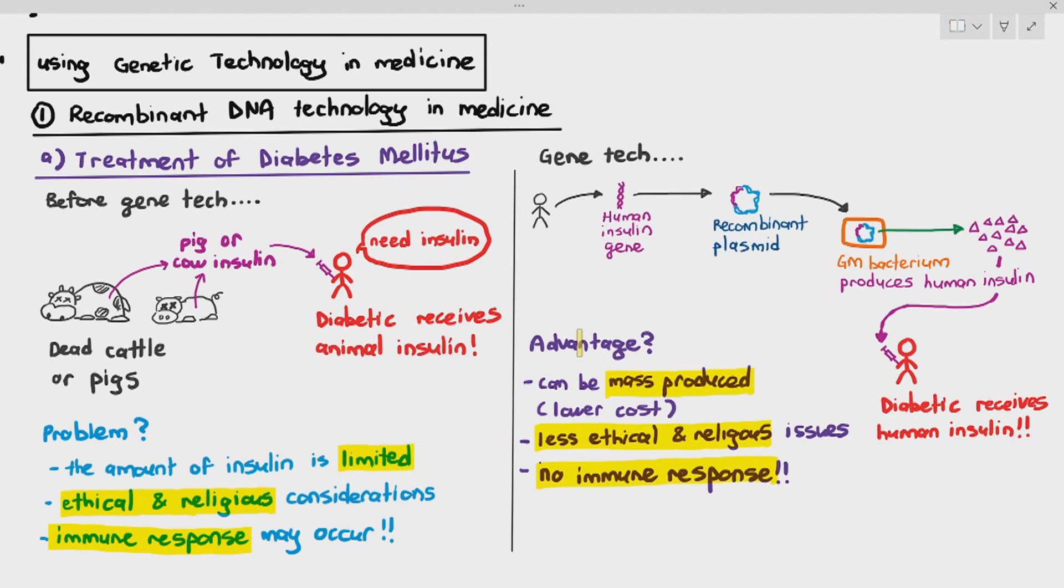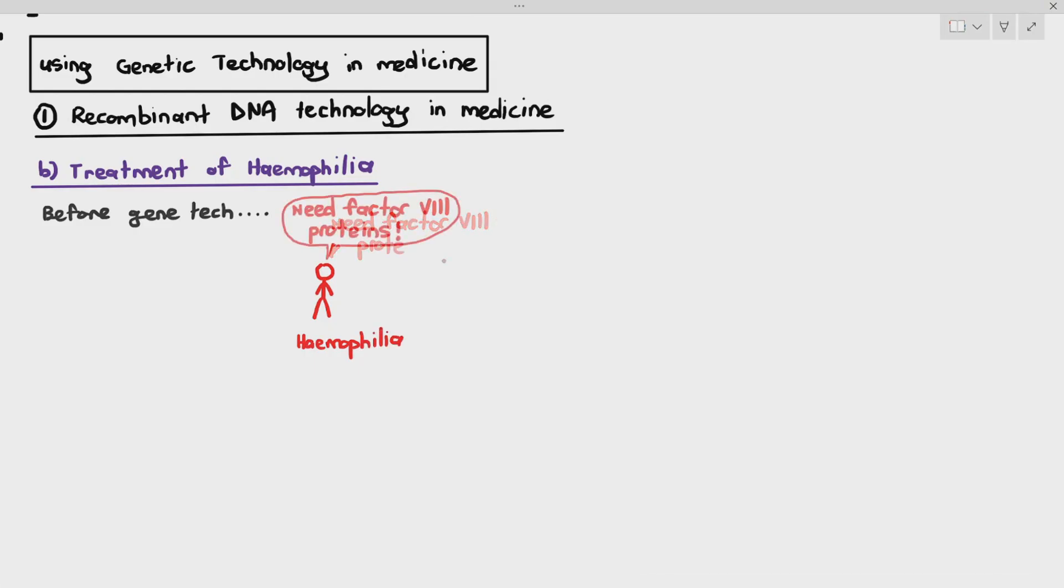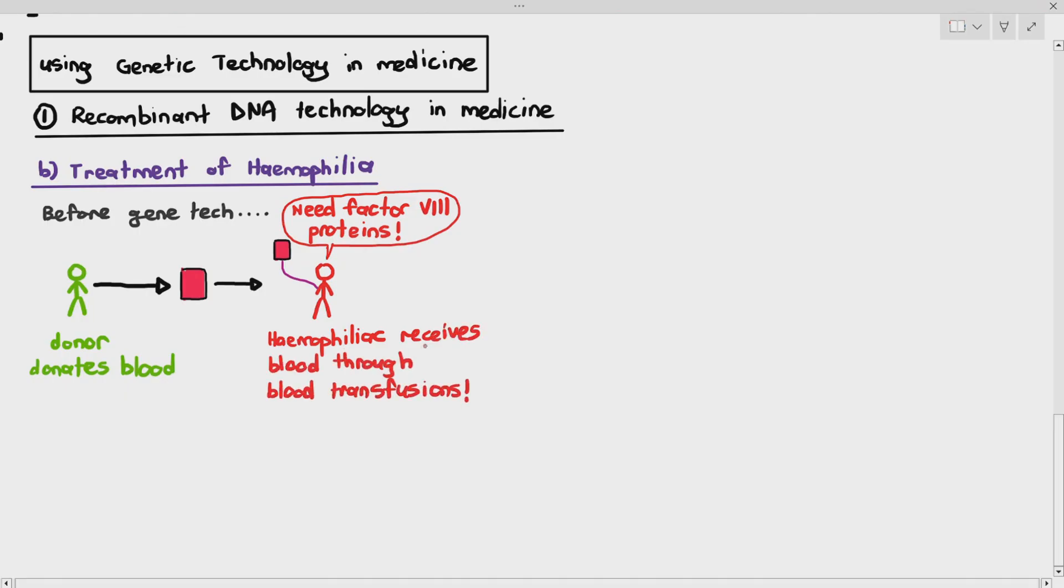Now using recombinant DNA technology as well in medicine, we can treat a disease known as hemophilia. It is a blood clotting disorder. So you need to know what is hemophilia. Now, before gene tech, the person with hemophilia needs a protein, and that particular protein is called factor 8 protein. Now before gene tech was a thing, where do these people who are hemophiliacs, where do they get factor 8 proteins? They would usually get factor 8 proteins from blood donors. So the donor donates the blood, obviously, and the blood is then transfused because the blood will contain factor 8 from the healthy person. It will be transfused into the hemophiliac. So the hemophiliac in this case receives factor 8 and blood through blood transfusion.